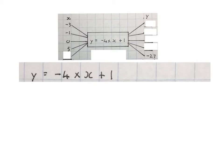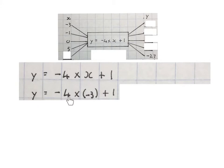So firstly they gave us X is minus three. I must use this rule to find the Y value. So we write down the equation, the rule, then we replace the minus three into the place of X. We can say Y equals minus four times, and in a bracket I substitute the minus three, plus one.